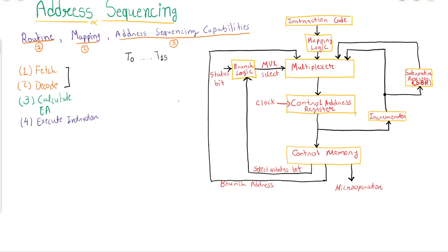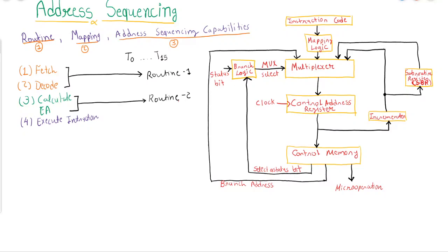There will be Routine 1, which is a set of instructions for fetching and decoding. All instructions will pass through this routine, where the instruction will be fetched and decoded. The next routine, Routine 2, is for calculating the effective address — applicable only in the case of memory reference instructions. In the case of indirect addressing mode, we have to retrieve the effective address of the operand, so a set of micro-instructions will be executed to complete this task. At last there will be Routine 3 to execute the instruction.